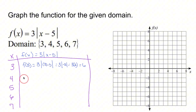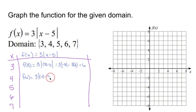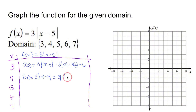Let's do it again with four. F of four is going to equal three times the absolute value of four minus five. Inside the absolute value, four minus five is negative one. The absolute value of negative one is one, so three times one is three.